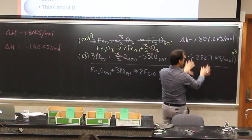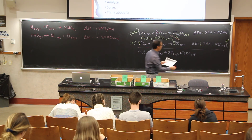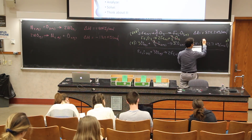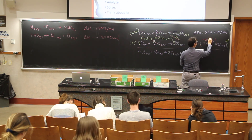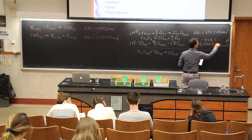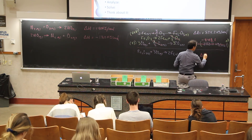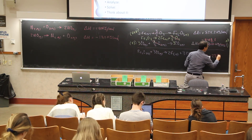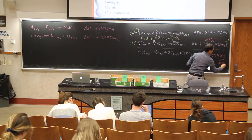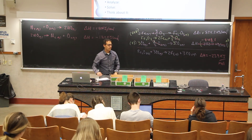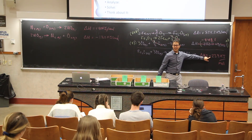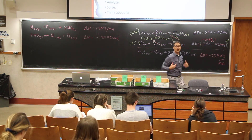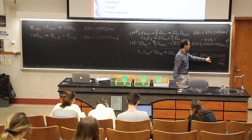Adding the enthalpies: three times negative 282.7 is negative 848.1 kilojoules per mole. Adding that to the reversed first reaction's enthalpy of positive 824.2, we end up with delta H equals negative 23.9 kilojoules per mole. Is this endothermic or exothermic? It's exothermic — the sign is negative, meaning energy is exiting the system. It will have less energy when done because it's losing energy.